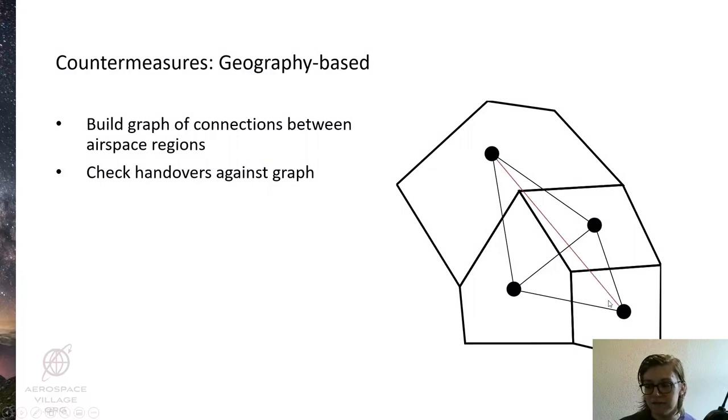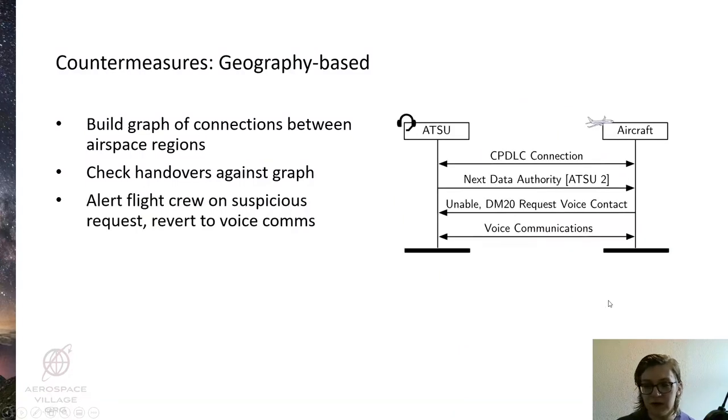In the case of this handover, which we outline in red, the edge doesn't exist on the graph, so we know that something is up. In this case we propose the following exchange of messages in which the aircraft tells the ATSU that it's unable to fulfill the handover and requests a fallback on voice communications. This means that the pilots can confirm that the handover is legitimate with the air traffic controller over voice.